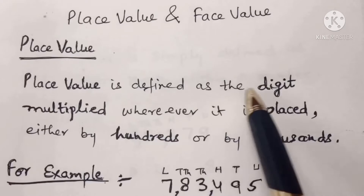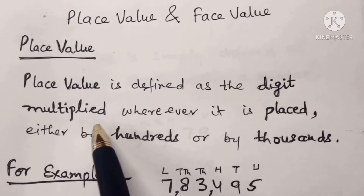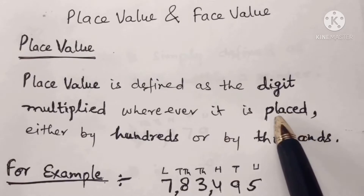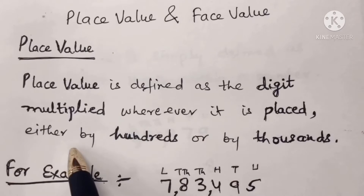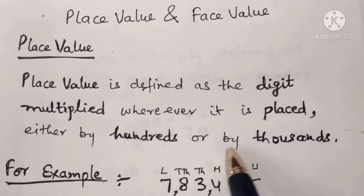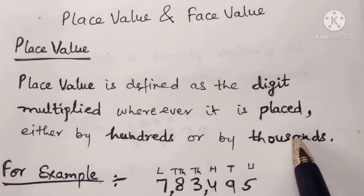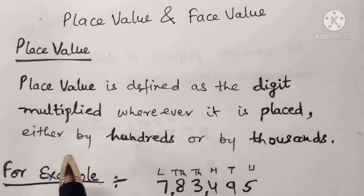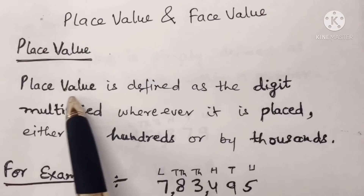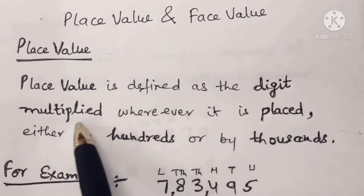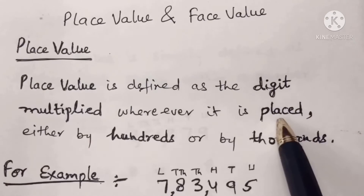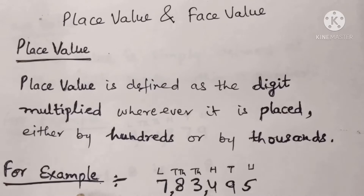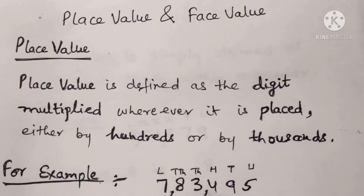Place value is defined as the digit multiplied by wherever it is placed — either by hundreds, thousands, and so on. For example, if you have the number seven lakh eighty three thousand four hundred and ninety five, how will we find the place value of seven?